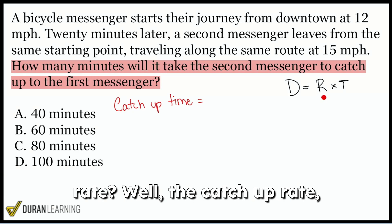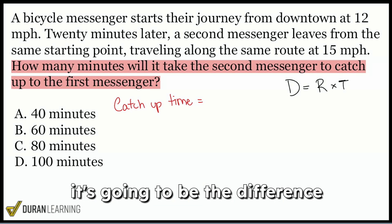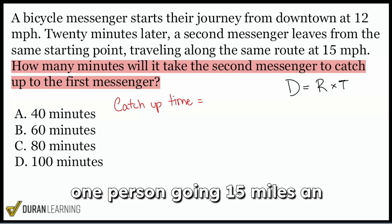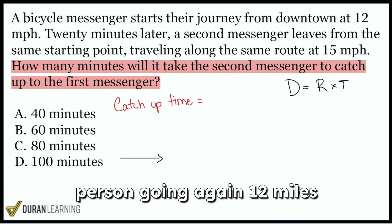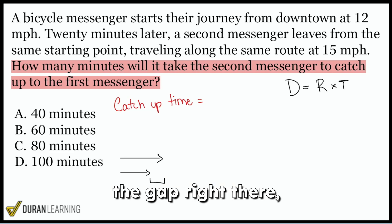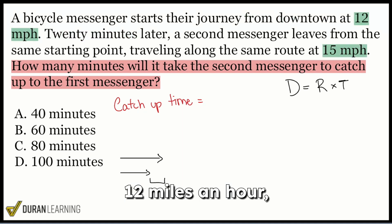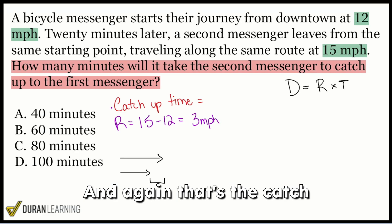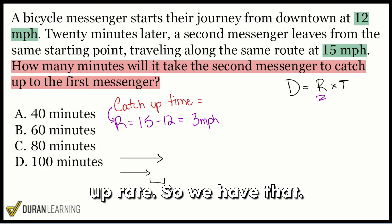How can we get the catch up rate? Well, the catch up rate, it's going to be the difference between the 12 miles an hour and the 15 miles an hour. The reason is because if you have one person going 15 miles an hour this way and the other person going 12 miles an hour, same direction, the difference, the gap right there, that gap is how quickly we're catching up. So when you take those two values, 15 miles an hour and 12 miles an hour, the second messenger is catching up at a rate of three miles an hour. So 15 minus 12 gives you three miles per hour. And that's the catch up rate. So we have that. We're good to go there.